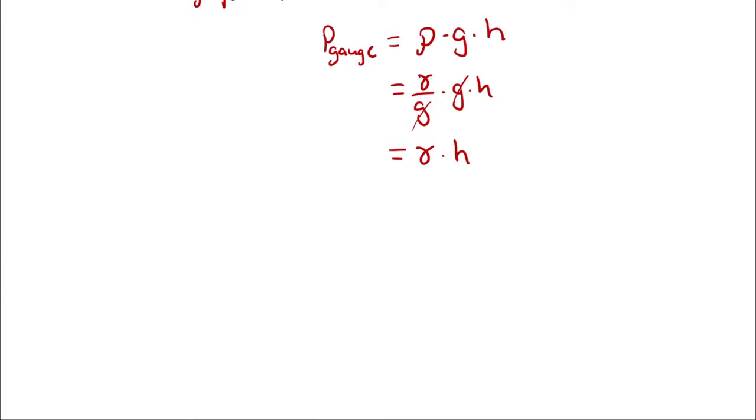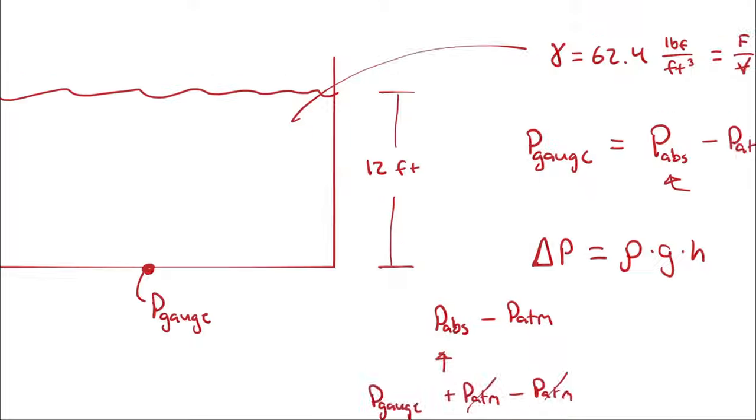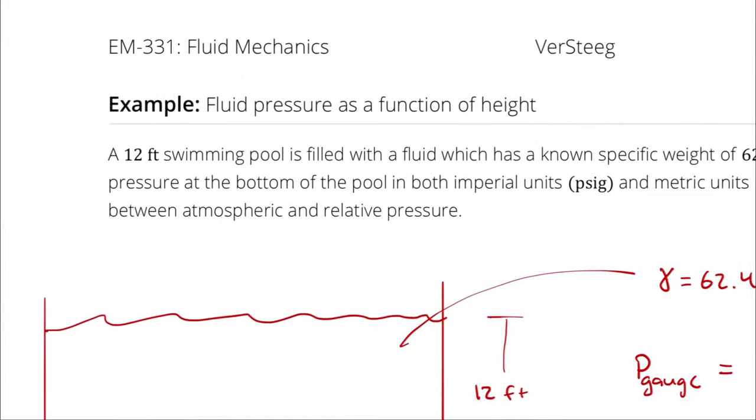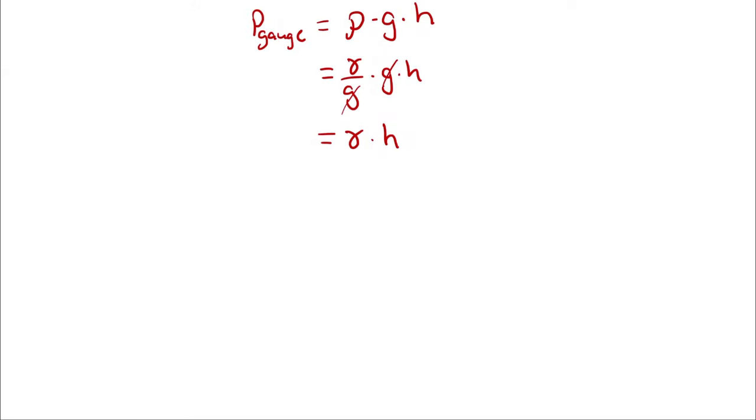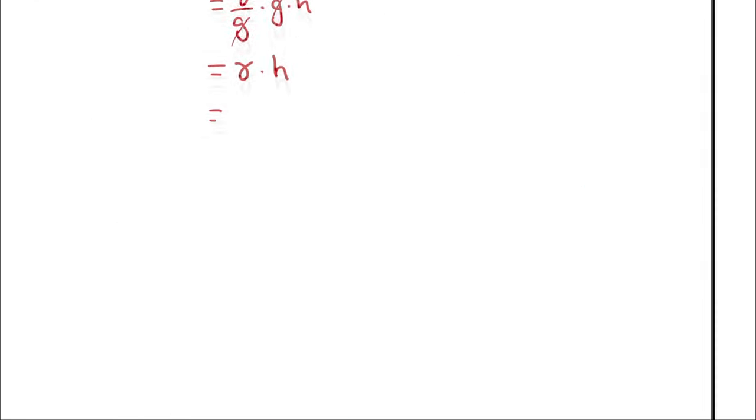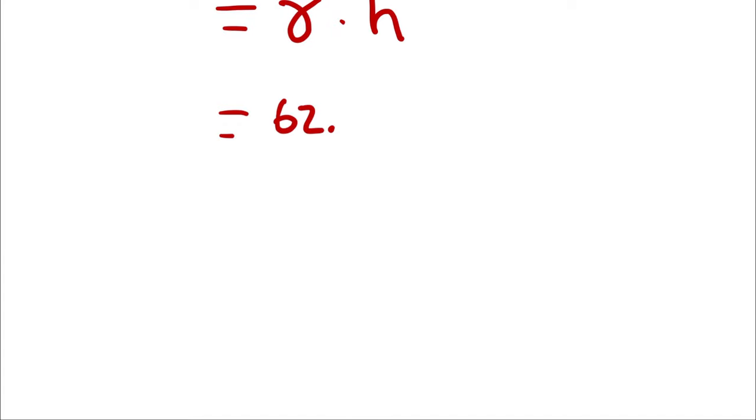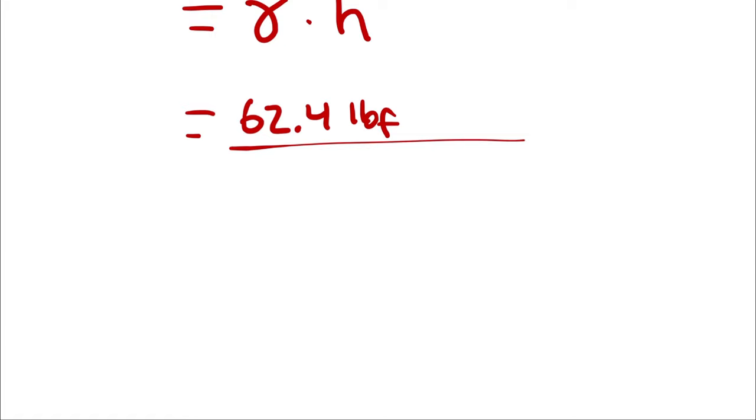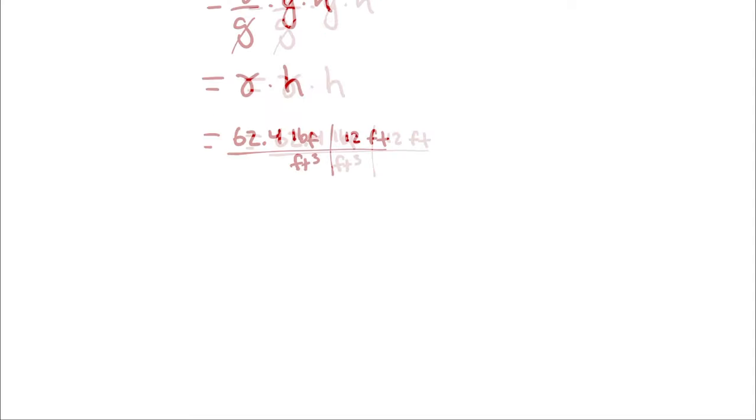So I begin with imperial units in PSIG. So I'm going to plug in 62.4 pounds of force per cubic foot, and I'm going to multiply by 12 feet, and my goal is to come up with PSI on the other end.